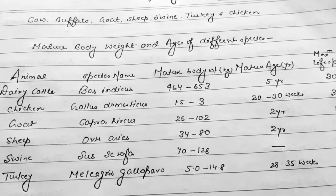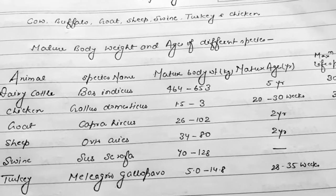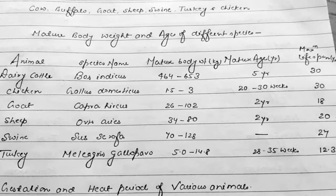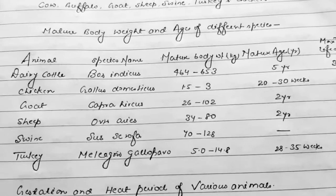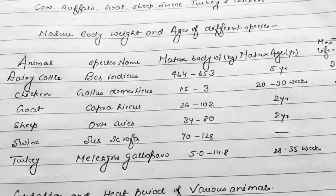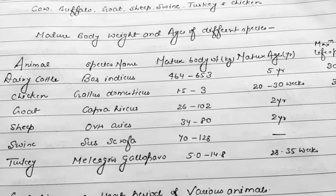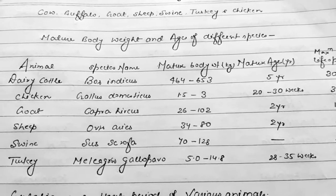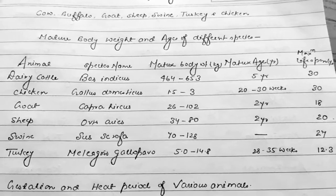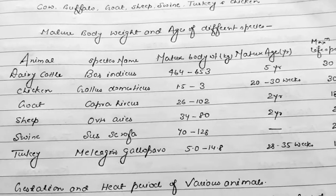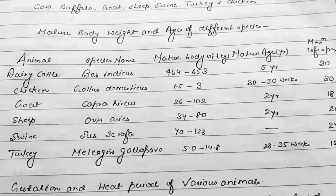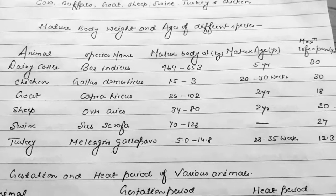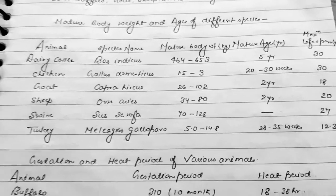Sheep: species name is Ovis aries, mature body weight is 34 to 80 kg, age of maturity is 2 years, and maximum life span is 20 years. Swine: species name is Sus scrofa, mature body weight is 70 to 128 kg, and maximum life span is 27 years. Turkey: species name is Meleagris gallopavo, mature body weight is 5 to 14.8 kg, age of maturity is 28 to 35 weeks, and maximum life span is 12.3 years.